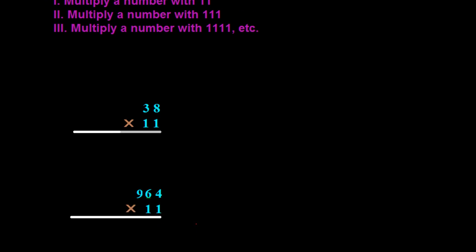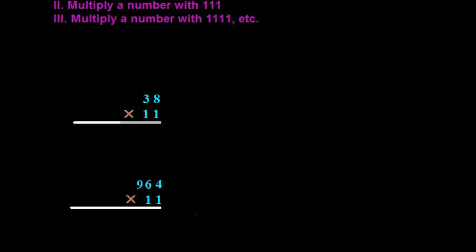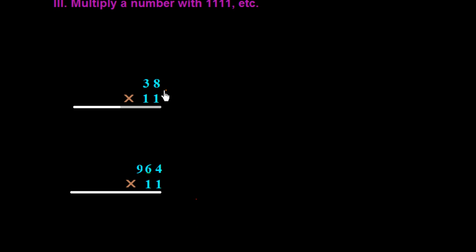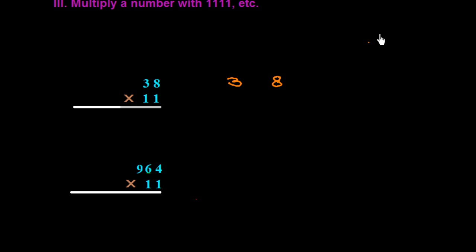Here we see there is 38, and we have to multiply it with 11. The multiplier is a two-digit number and 11 is also a two-digit series. First of all, I will write this number as 3+8, putting a plus sign between the digits.